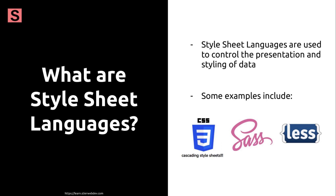CSS, which stands for cascading stylesheets, works alongside HTML to give styling to the data that we've just marked up with HTML. SAS and LESS are both stylesheet languages that add extra functionality on top of CSS. We won't learn them in this course; however, you're welcome to explore them on your own after we cover the basics of CSS.